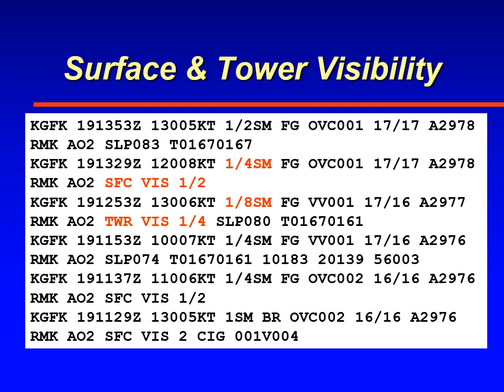In the observation right after that — a special observation at 1329 Zulu — you see the visibility is one-quarter statute mile with fog, but the remarks section says surface visibility is one-half mile. So surface visibility is higher in this case, and the one-quarter mile, which is the prevailing visibility, is measured by the control tower. You'll see this quite frequently at Grand Forks and other airports. That way, when you're flying, you know that visibility is variable and may be slightly different depending on where you're located.